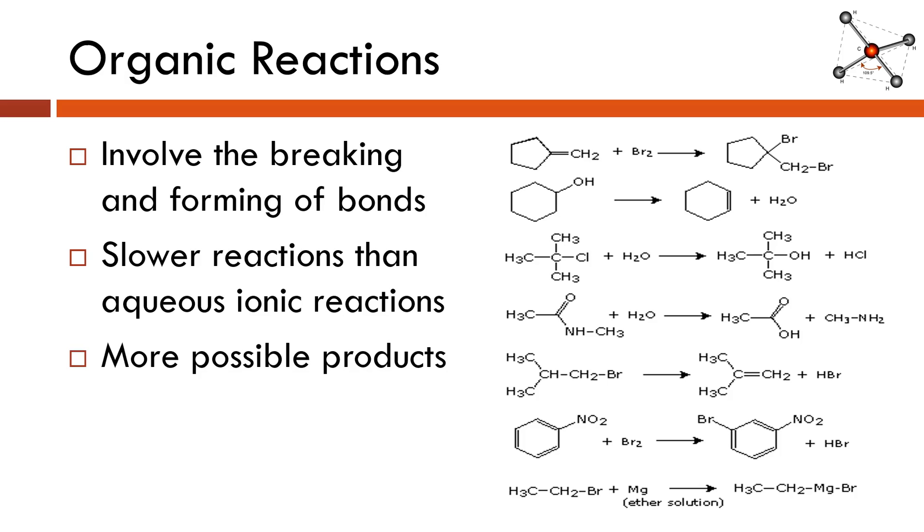And unlike our double replacement reactions where we could predict with pretty much 100% certainty what the products would be, our organic reactions are going to be able to give us more possible products. A lot of the reactions that we look at in this unit are going to tend to give just one product, but in reality, just due to the nature of the reactants and there are so many different carbons for each of the other reactants to react with, we tend to end up with a mixture of products. Again, we're going to focus on reactions that really just give you a single product. Okay, so we're going to talk about three different reactions in this lesson and what you really should focus on is recognizing what type of reaction is occurring.